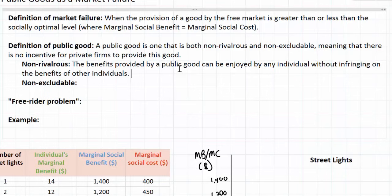The benefits of both defense and street lights are therefore non-rivalrous: me benefiting from a street lamp on a dark city street does not limit other people's enjoyment of that street lamp. The opposite of non-rivalrous is rivalrous. An example of a rivalrous good is a smartphone — when I use my Samsung smartphone, nobody else in society benefits from its use. My neighbors and friends do not benefit at all. Hence public goods are non-rivalrous, meaning the benefits can be enjoyed by all in society without diminishing anybody else's benefits.